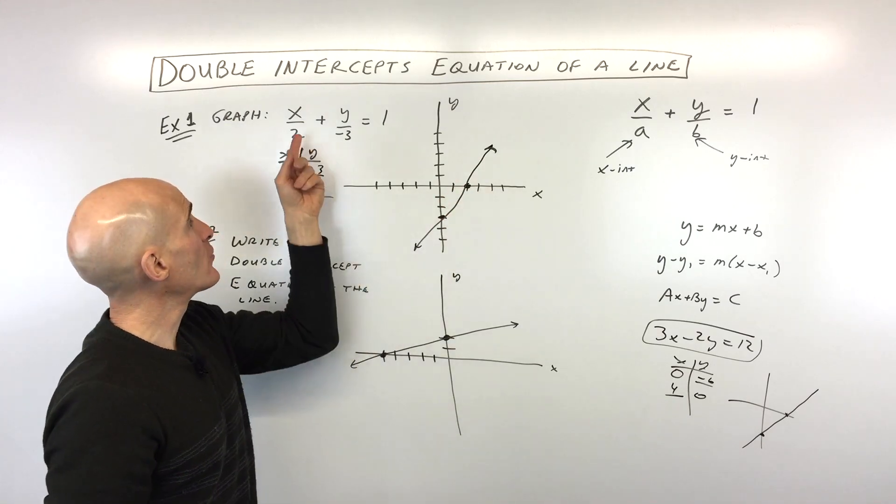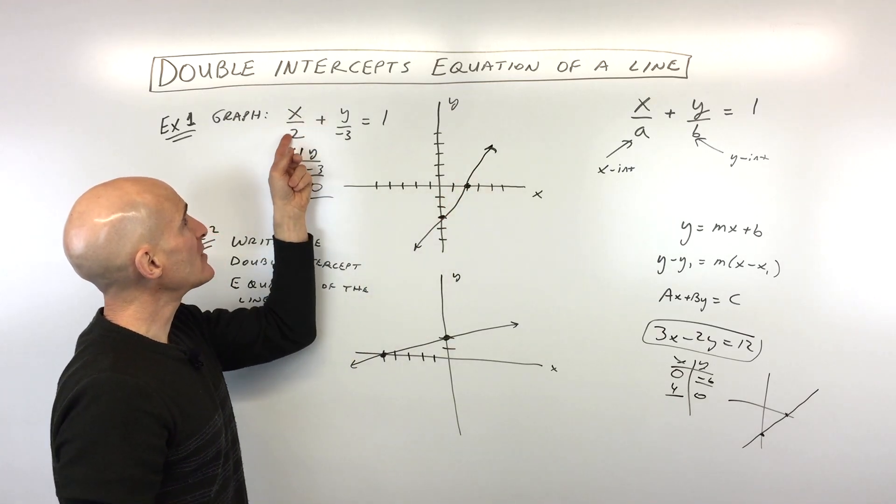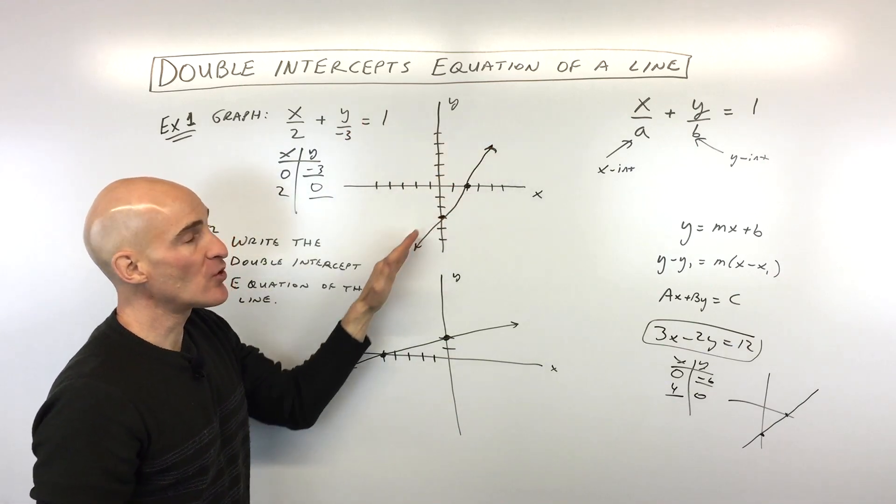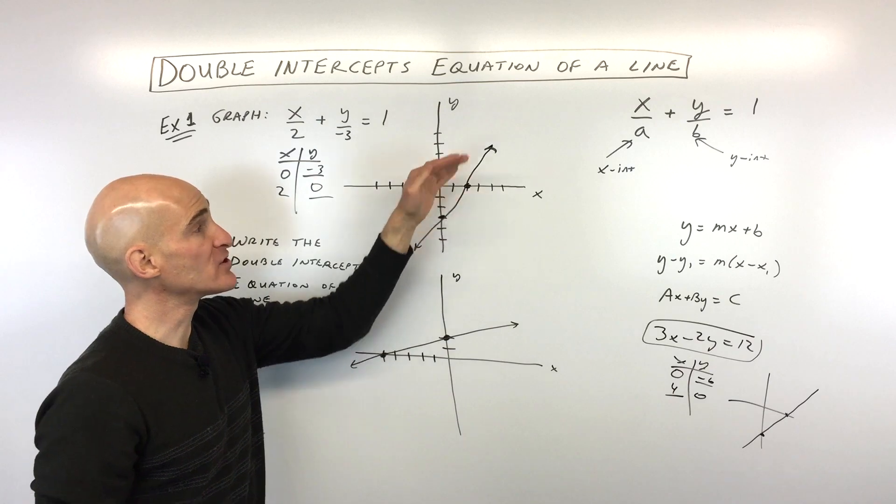But this is just a shortcut. If you recognize that the denominator, the number underneath the x is the x-intercept, the number underneath the y is our y-intercept, once you have those two points, you can draw a line through it.